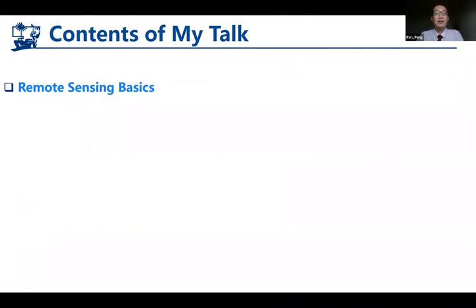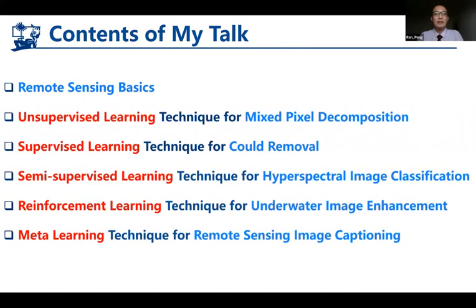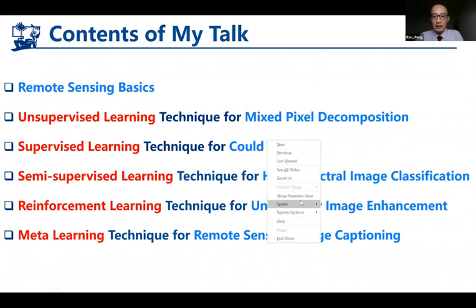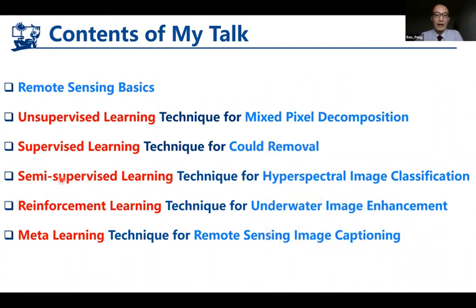The contents of my talk: I will first talk about some remote sensing basics, and then I will present five machine learning techniques for five specific remote sensing tasks. The five remote sensing tasks belong to five types of machine learning, marked in red, and the five remote sensing tasks are marked in light blue.